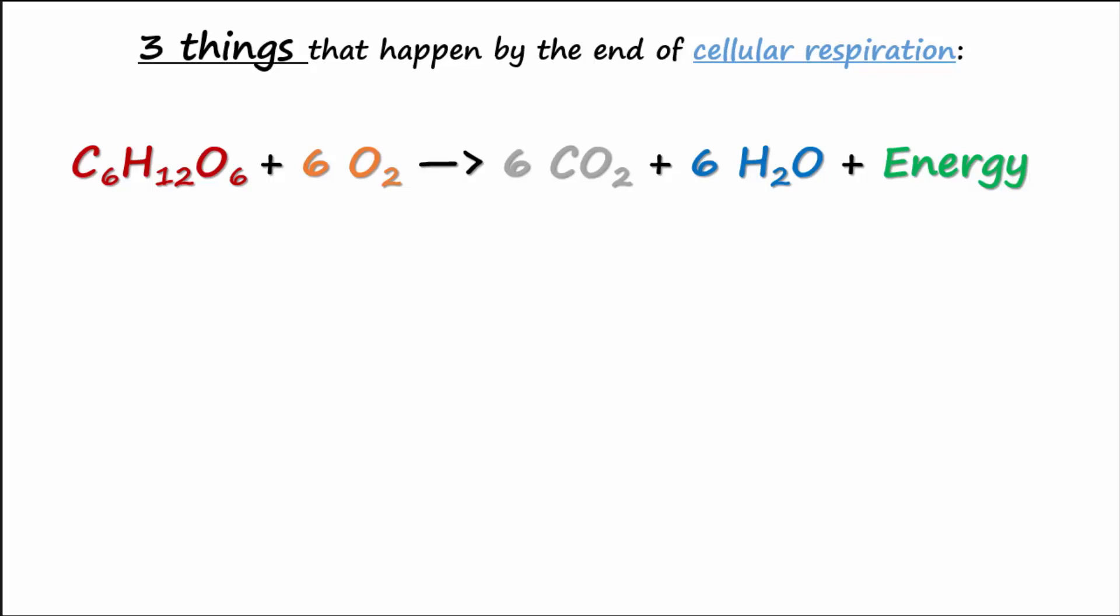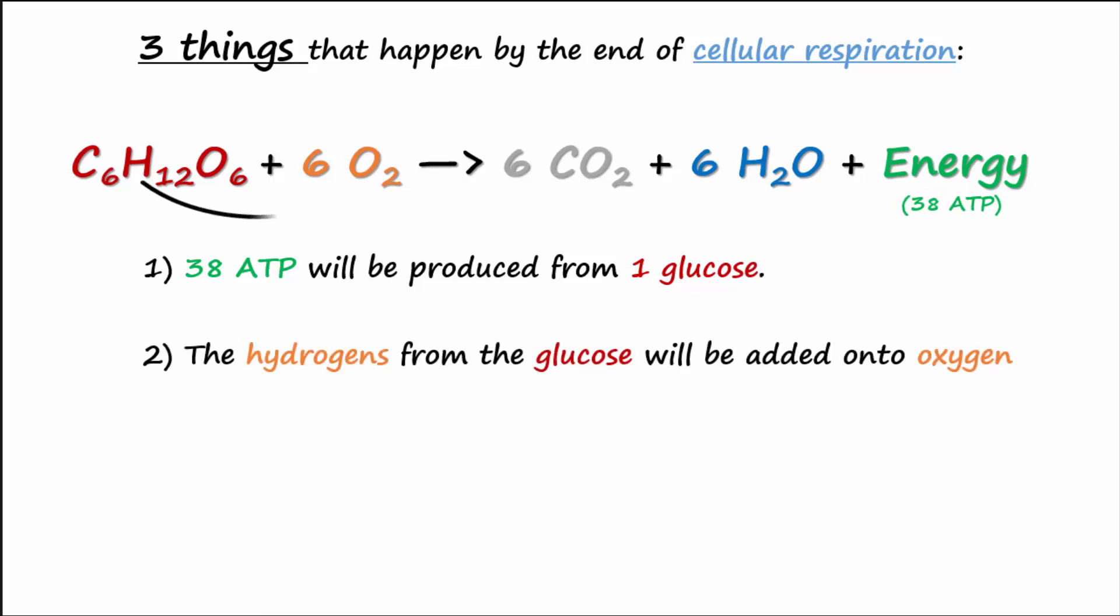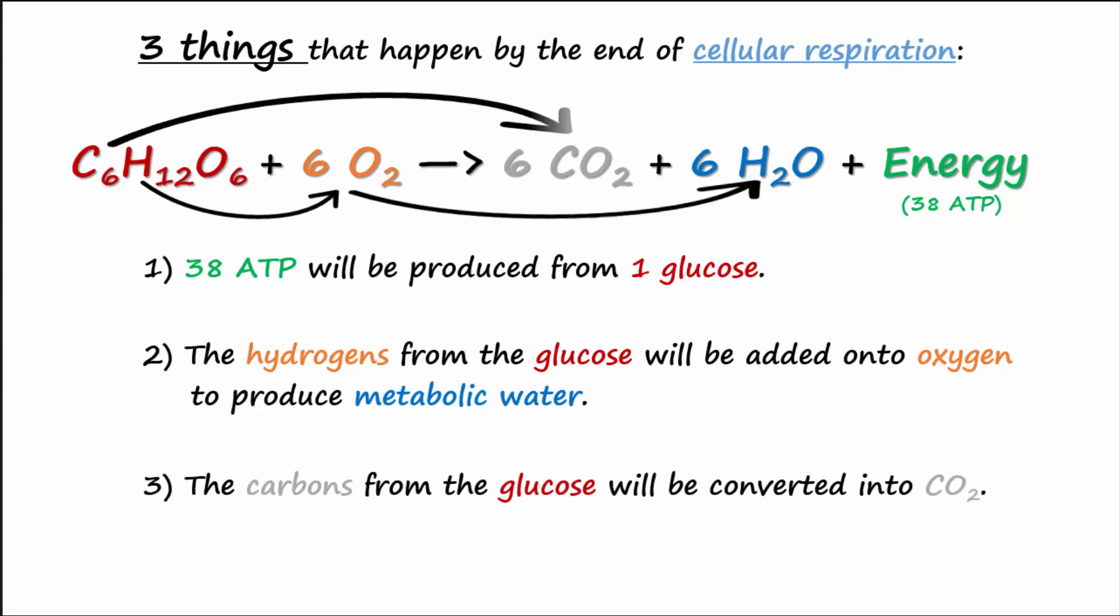So we said that three things would happen by the end of cellular respiration. They were: make 38 ATP, the hydrogens and electrons from glucose will be added onto oxygen to make metabolic water, and all of the carbons of the glucose would be converted into carbon dioxide.